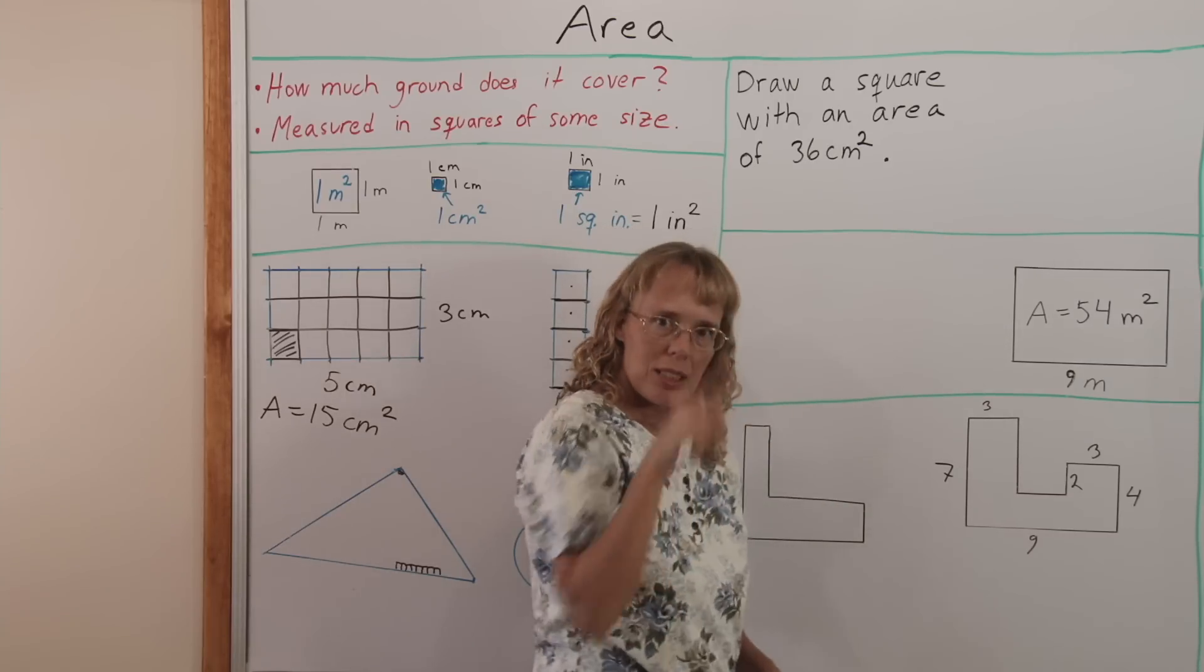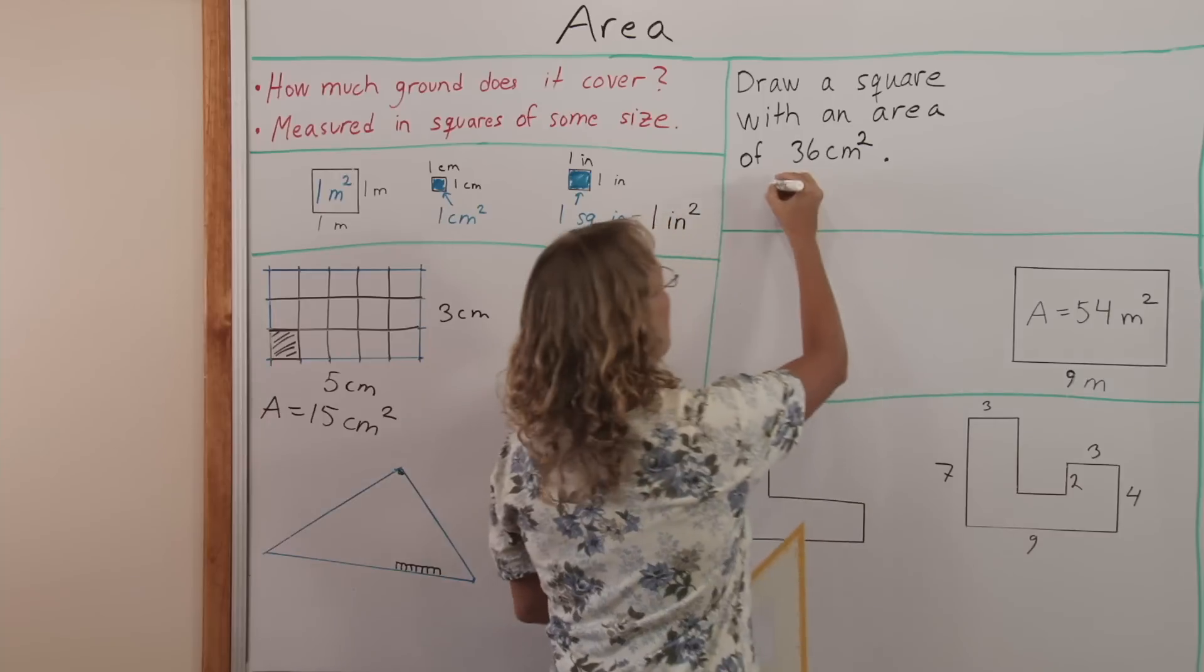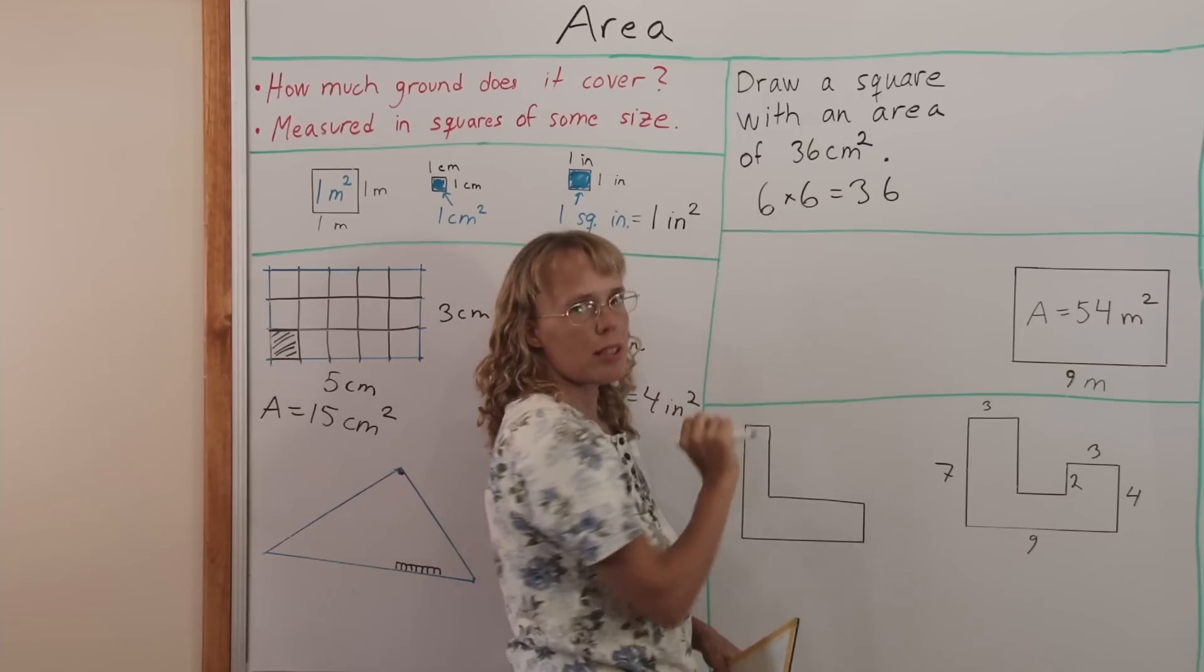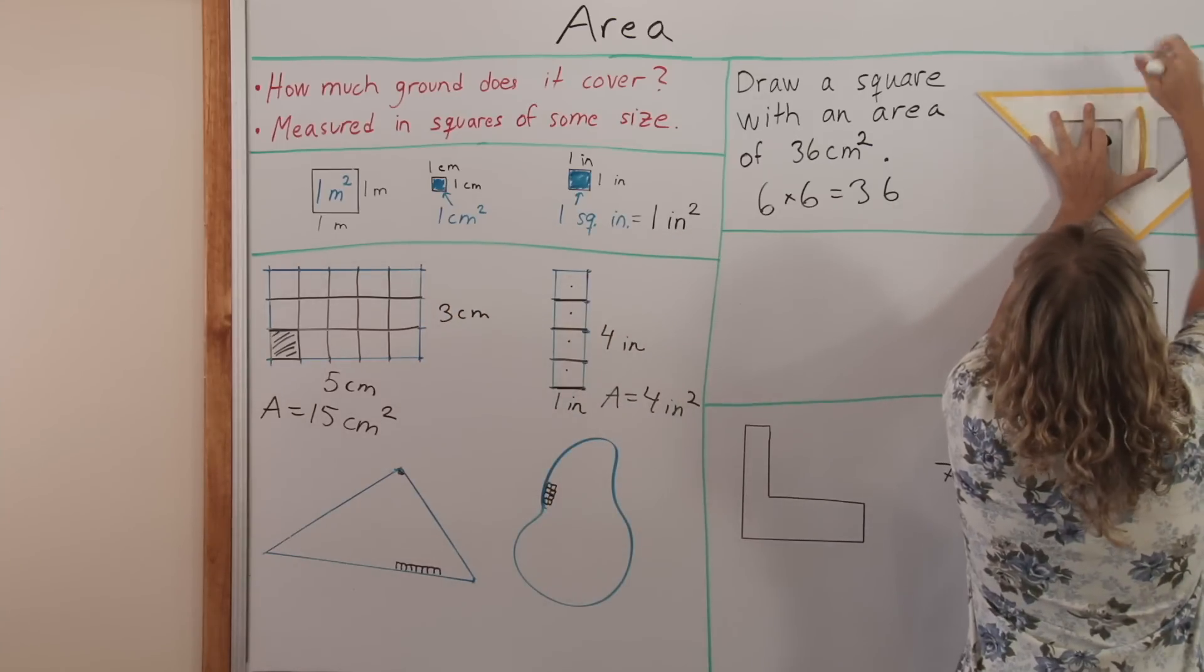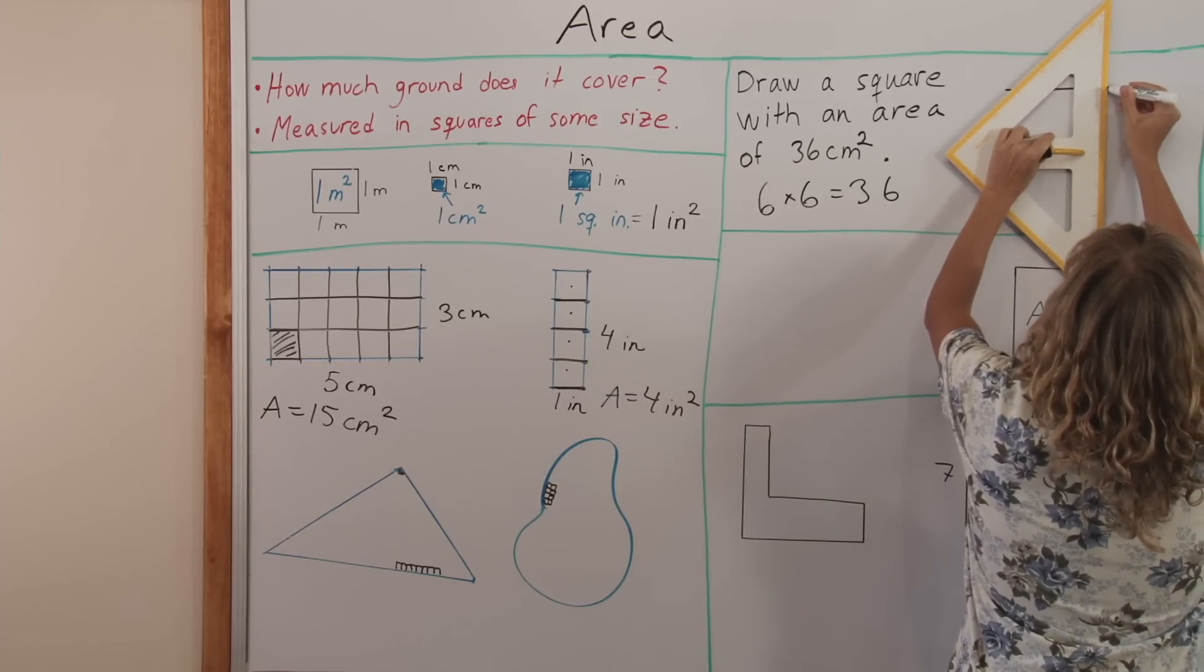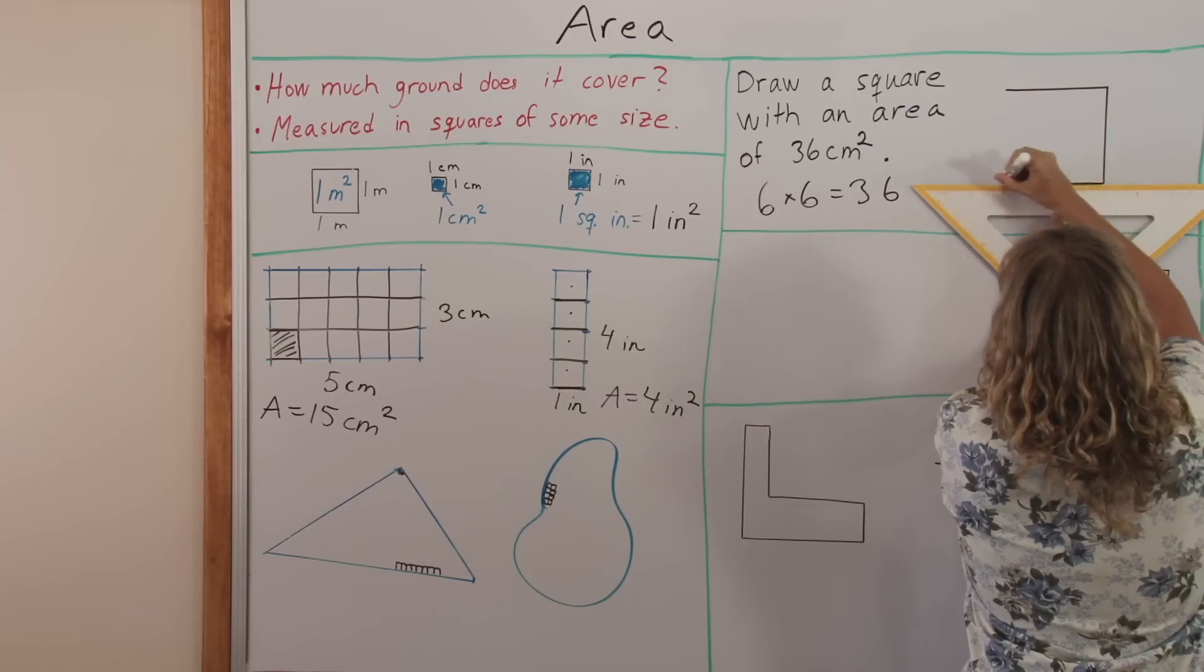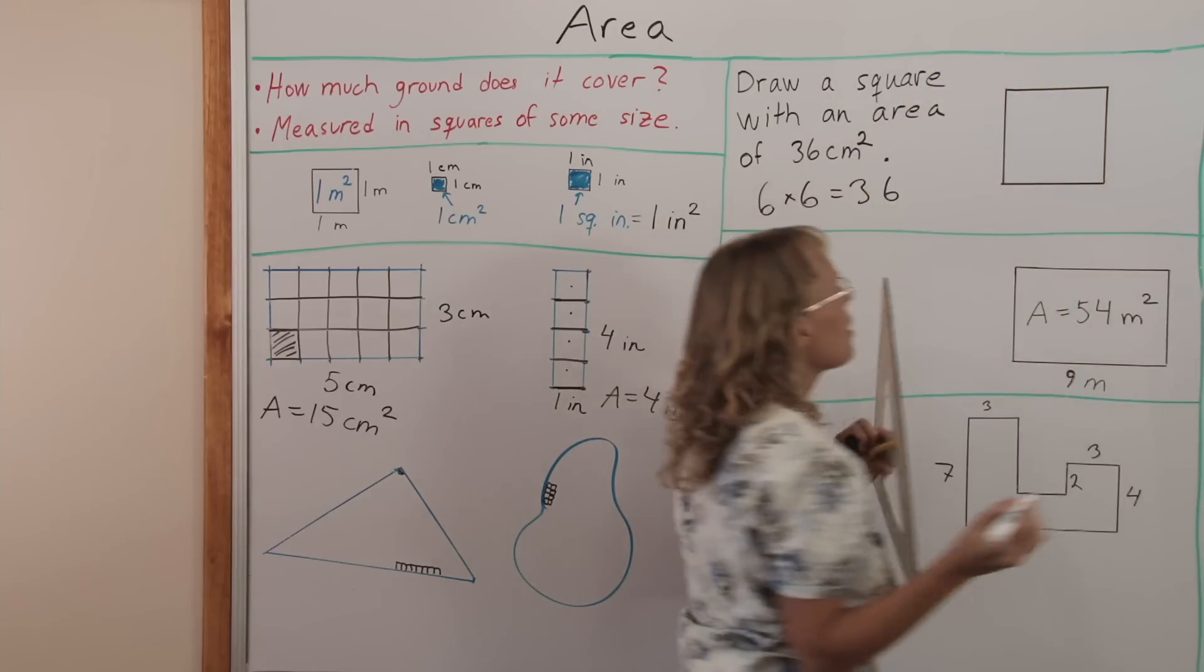What number times itself gives 36? You probably know that it is 6. 6 times 6 is 36. So the 36 being the area, 6 must be the side, or 6 centimeters. Now I can draw it the best I can. There is my square.